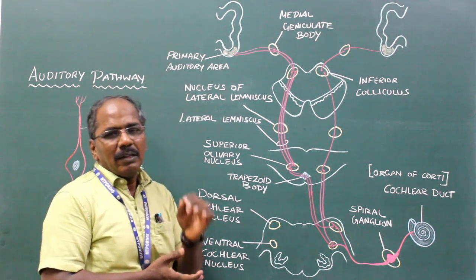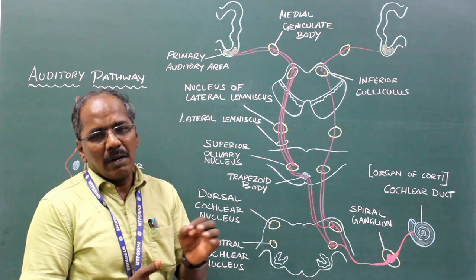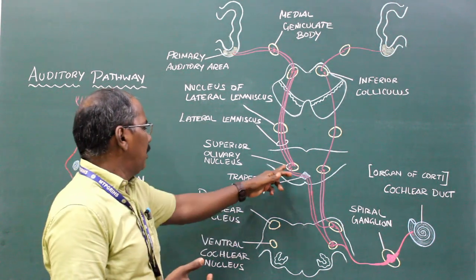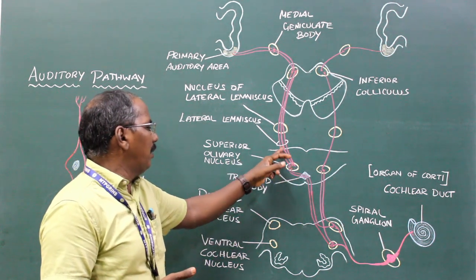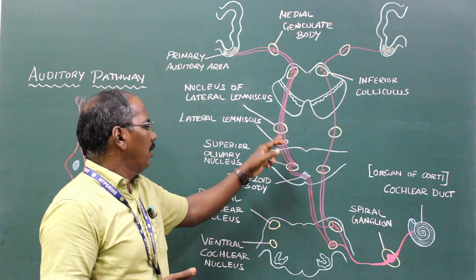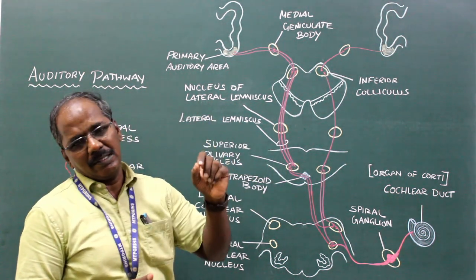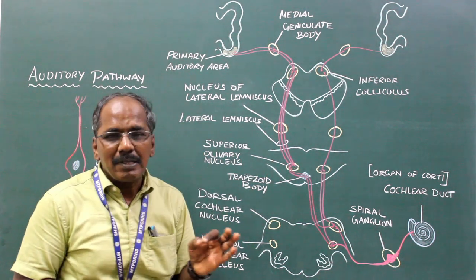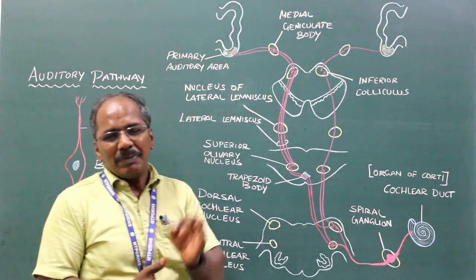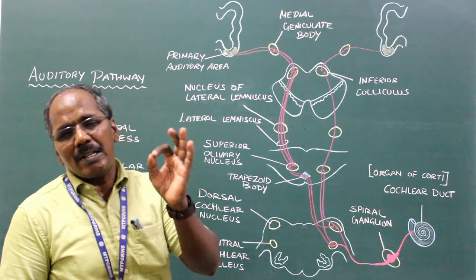The third order sensory neurons arise from the superior olivary nucleus and form the lateral lemniscus. The lateral lemniscus is the principal ascending auditory tract.